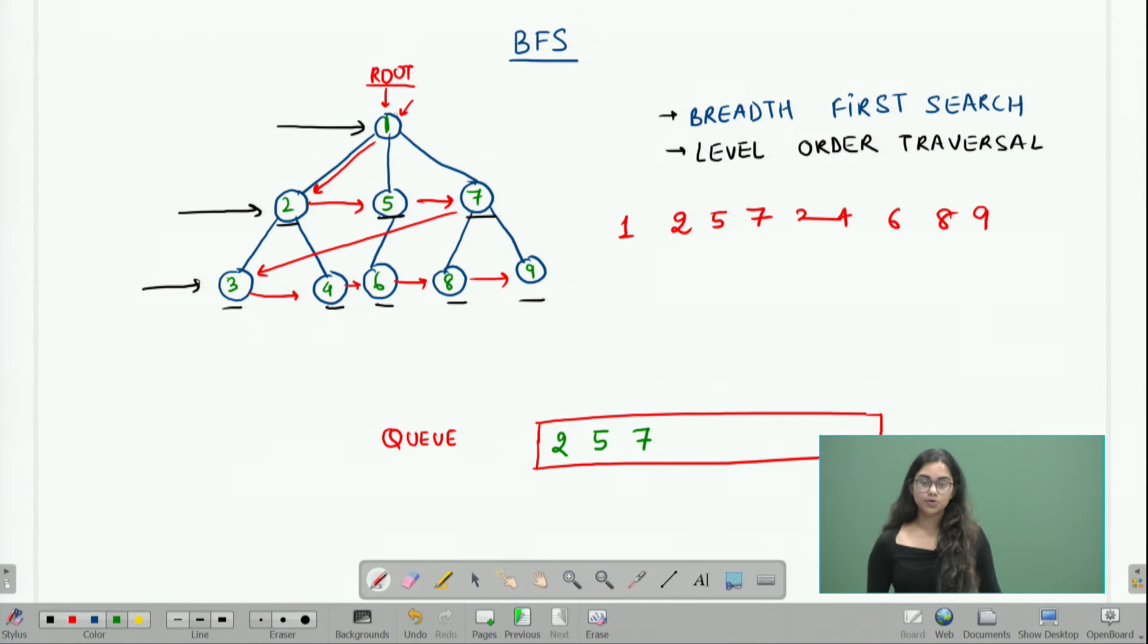Once I am done exploring the first node which has value 1, I will start popping from my queue. Once I pop a number, suppose I pop 2, when I pop a number that means I have the permission to explore it, so I explore 2.